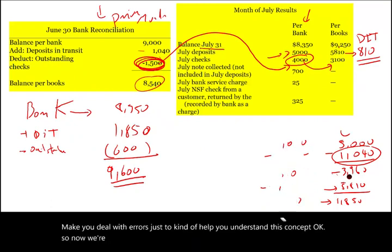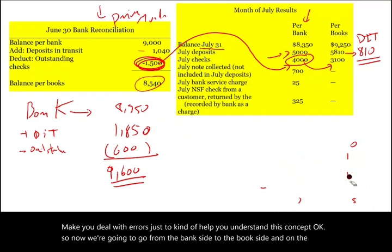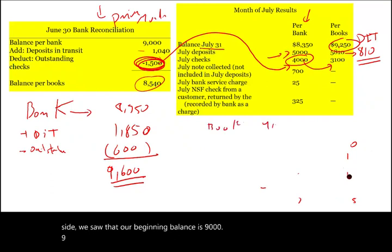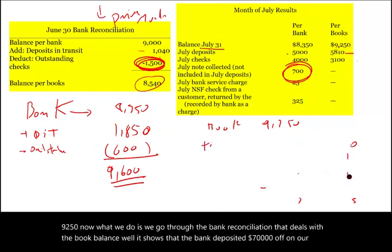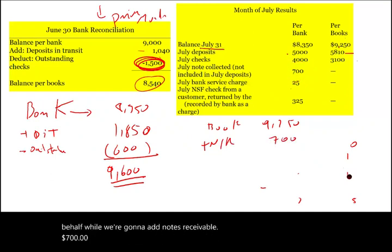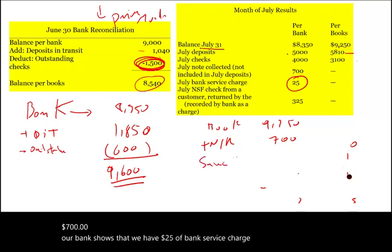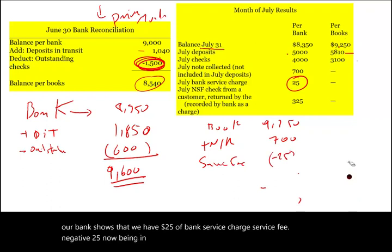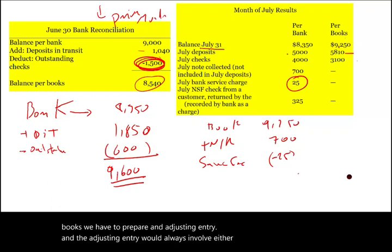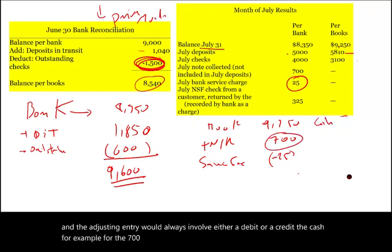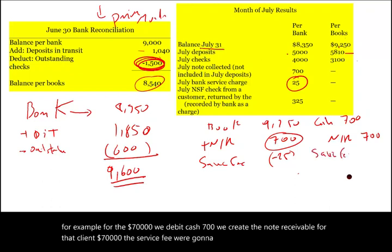Now we go from the bank side to the book side. Our beginning book balance is $9,250. The bank deposited $700 on our behalf — we add notes receivable $700. The bank shows $25 of bank service charge — we deduct $25. For every adjustment we make on the books, we have to prepare an adjusting entry involving either a debit or credit to cash. For the $700, we debit cash $700 and credit notes receivable $700. For the service fee, we debit service fee expense $25 and credit cash $25.